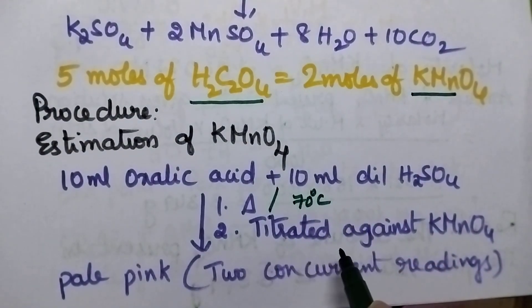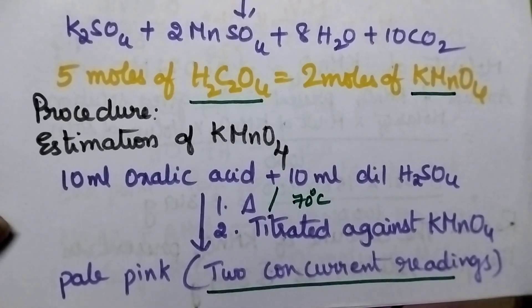In the hot condition, it is titrated against KMnO4 solution until the colorless solution changes to pale pink color. The same titration is repeated until 2 concurrent readings are obtained.